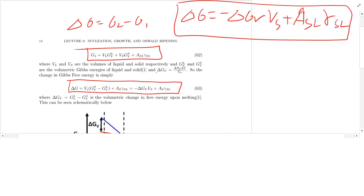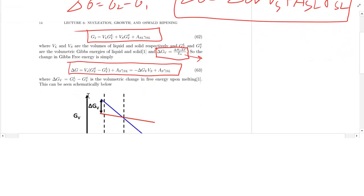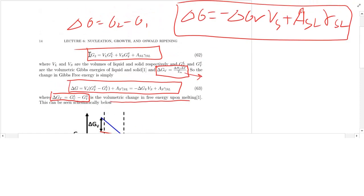Delta GV has a couple of different expressions. Delta GV is the volumetric change in free energy upon melting. If you just do delta G2 minus delta G1 and substitute in, that's how you get the minus delta GV term. The derivation is in the notes.